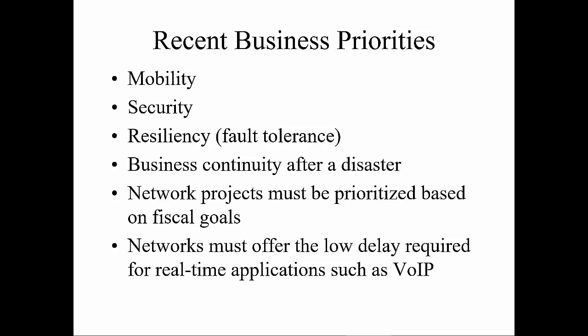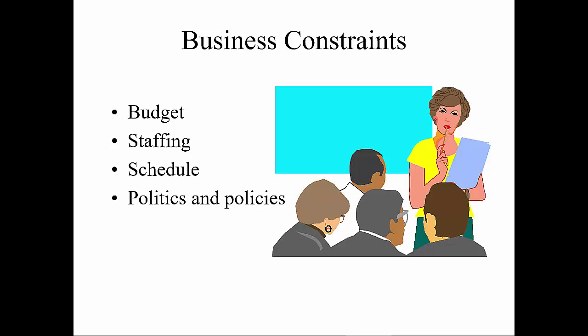Some experts have a mild dislike for the word 'resilience' as it sounds too much like a stretched rubber band. Depending on the book you're reading, it might be called fault tolerance instead. So business constraints include budgeting, staffing, schedule, politics, and policies. How could they affect our network design?